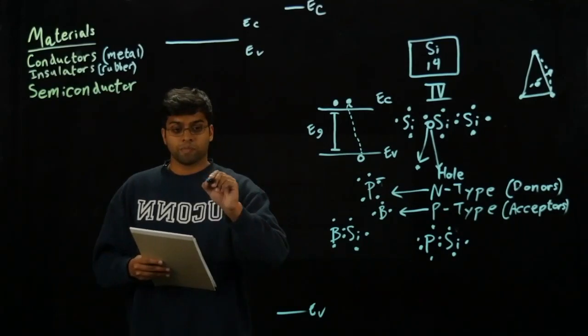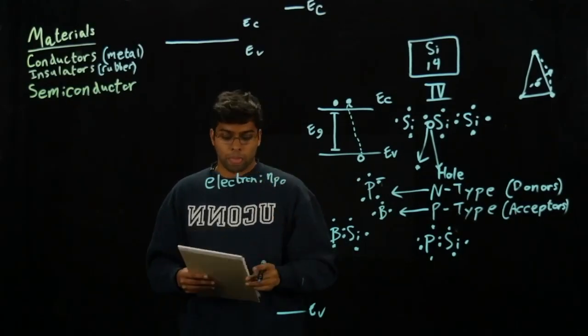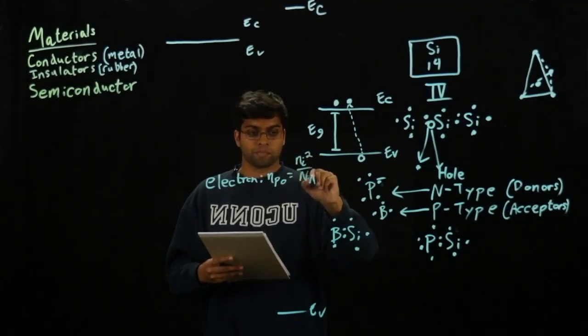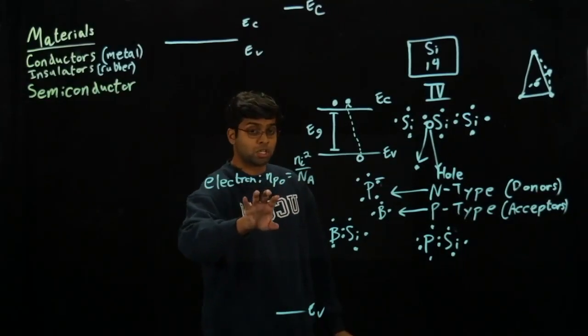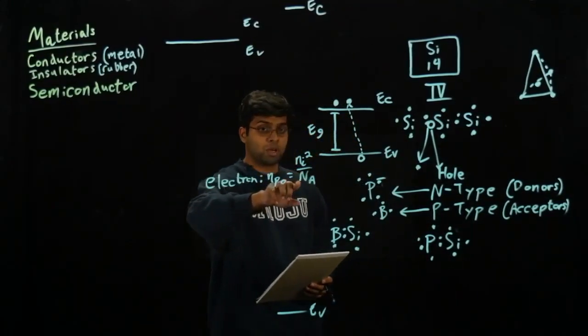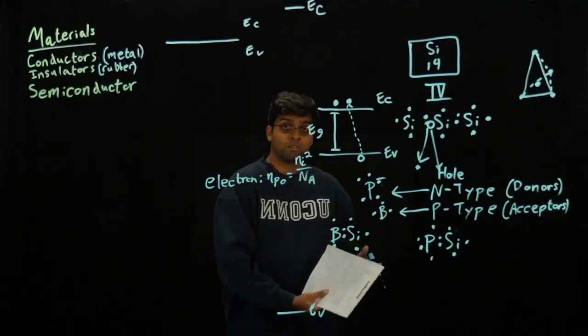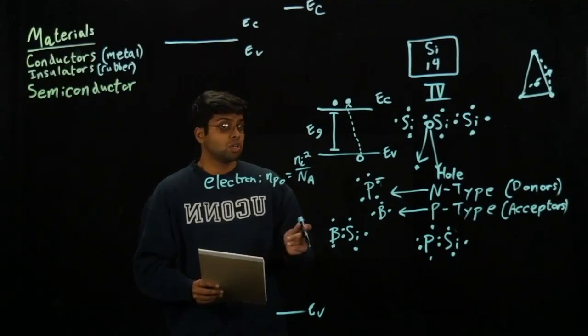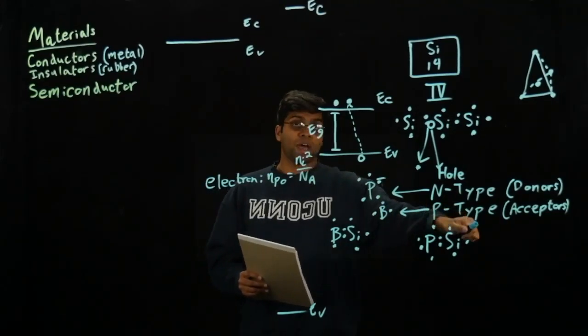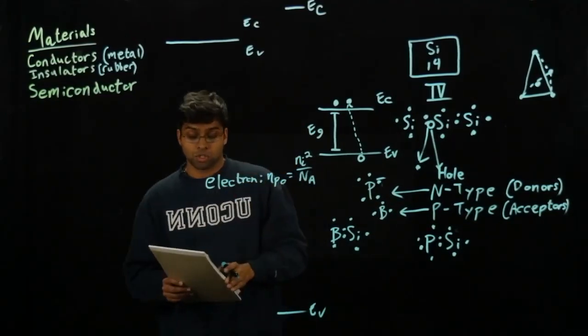We're going to talk about how do we calculate the electron and hole concentration. When I look at electron concentration, we're going to represent that with the variable npo, and we're going to set that equal to ni squared divided by na. This equation shows the electron concentration is equal to the intrinsic concentration squared divided by the acceptor count. When I use the word intrinsic, all I'm saying is it is neither positively doped or negatively doped. It has the same number of positive and negative carriers. I'm taking what it takes to be intrinsic, dividing by how many positive carriers are in the system, and I'm going to get the amount of negative carriers.